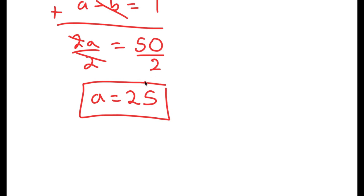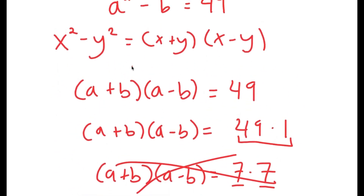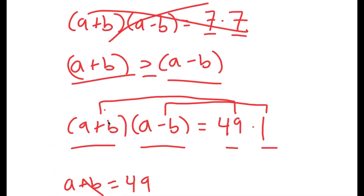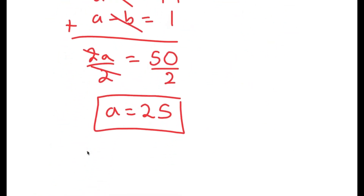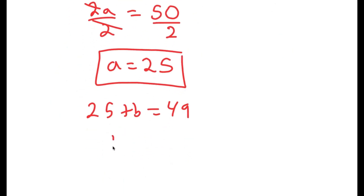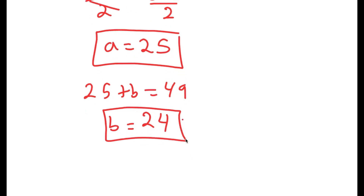Now that we know that a is equal to 25, remember how we said that a plus b is equal to 49. So this means that 25 plus b is equal to 49, and b is equal to 49 minus 25, which is 24. So a equals 25 and b equals 24.